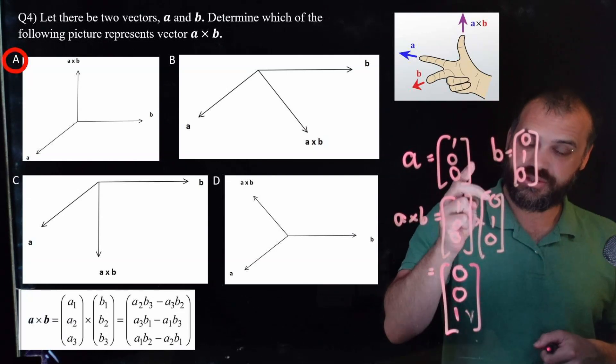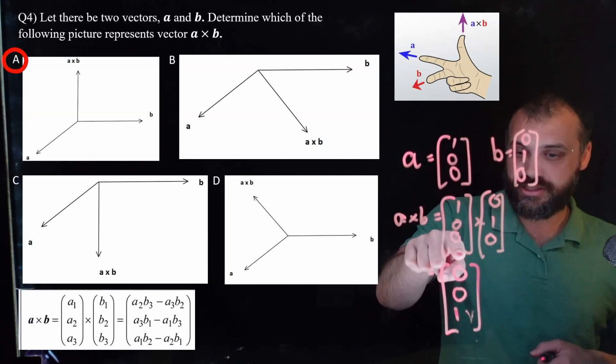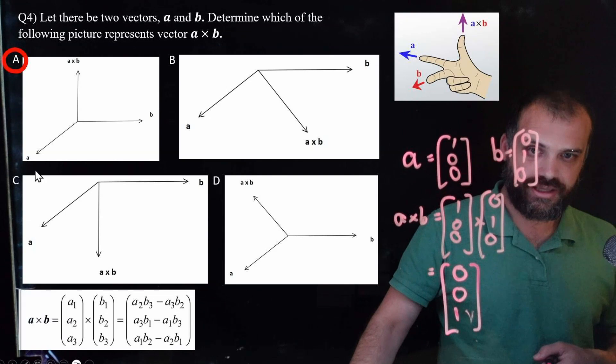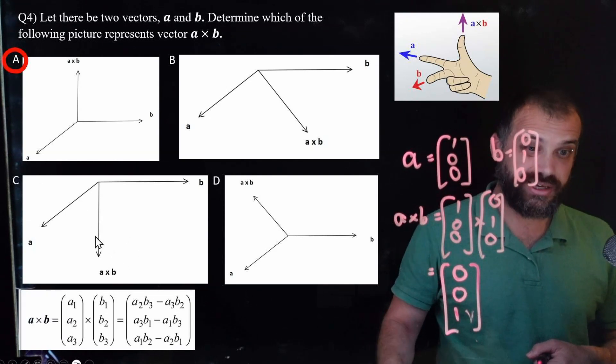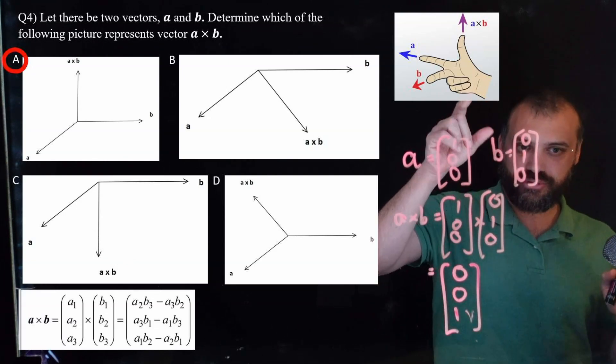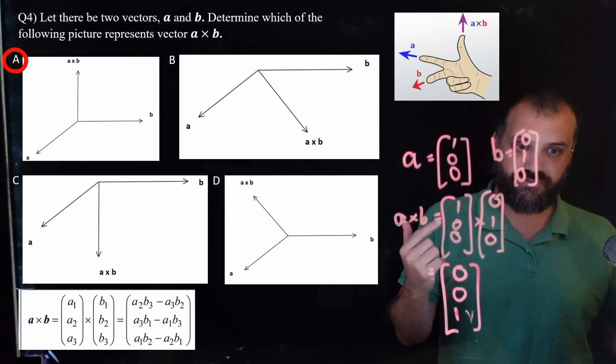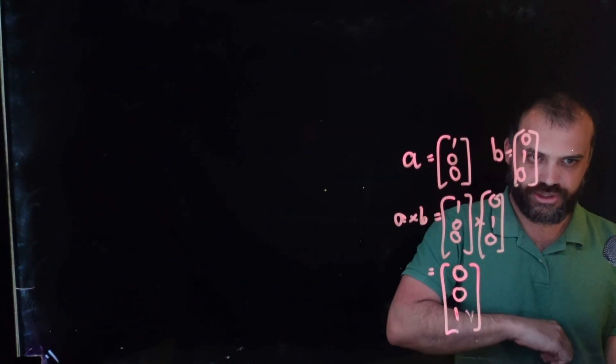If you reversed the order, if you did B times A, you wouldn't get 0, 0, 1. You'd get 0, 0, negative 1, and the answer would be this one here. This is B times A, not A times B. Hope that's not too confusing. Right-hand rule or just sub in some standard values to figure out whether it's going up or down. Celebration, next question.